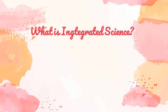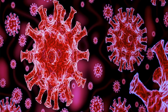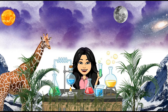The last classification of science is integrated science. Integrated science introduces the three branches of pure science: life science, physical science, and earth science. The study of COVID-19 belongs to life science. Science covers a lot of things — in fact, it can be divided into several branches.